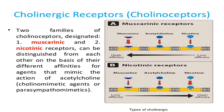The cholinergic receptors, also called cholinoceptors, are divided into muscarinic and nicotinic receptors. These receptors are found in the organs receiving parasympathetic or sympathetic innervation. Muscarinic and nicotinic receptors can be distinguished from each other based on their different affinities for agents that mimic the action of acetylcholine, called cholinomimetic or parasympathomimetic agents.